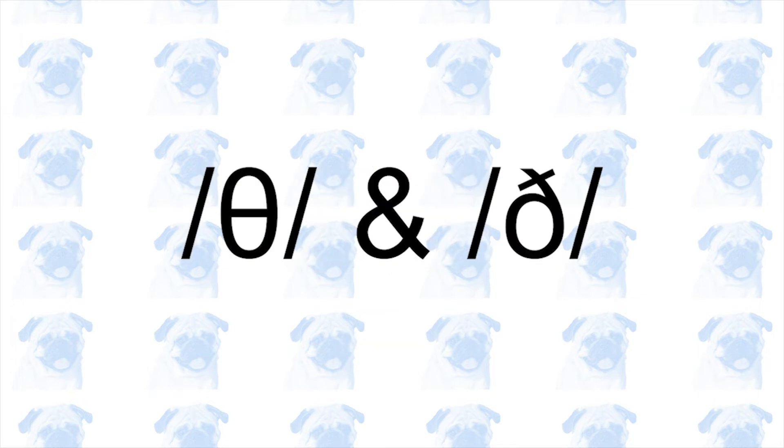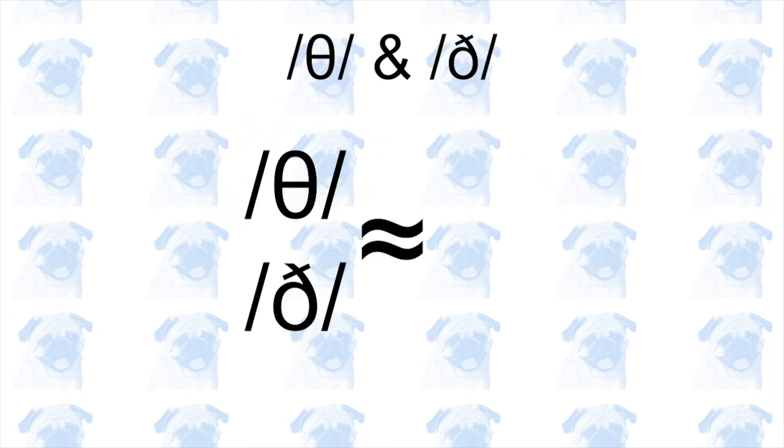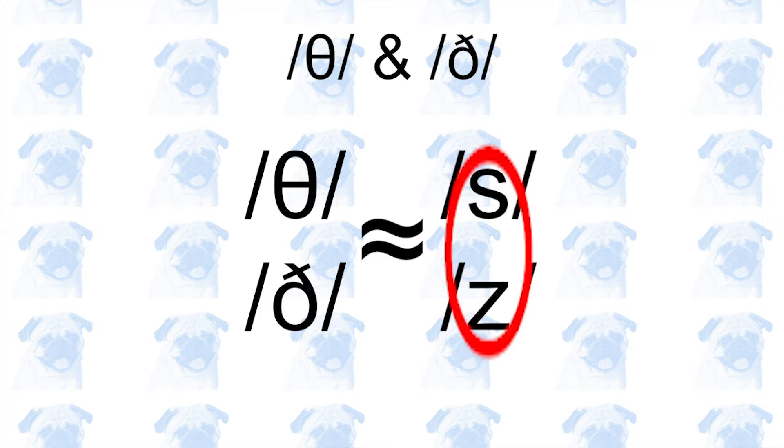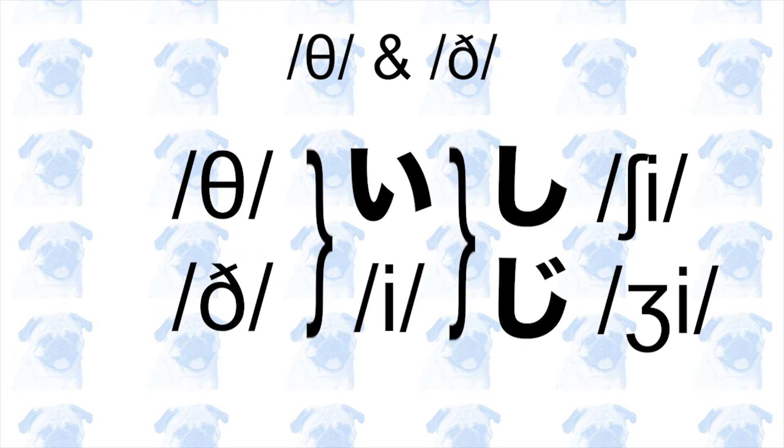These sounds do not exist in Japanese. The closest sounds that we have are S and Z, so all the rules that apply to S and Z also apply to them. This means that when followed by the E sound, they also become SH and ZH. Listen to some examples.